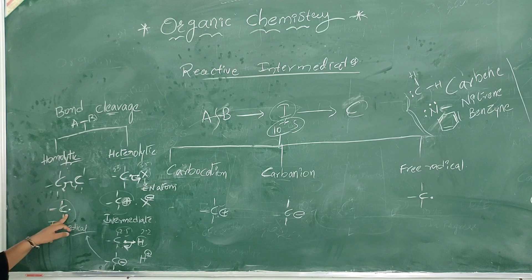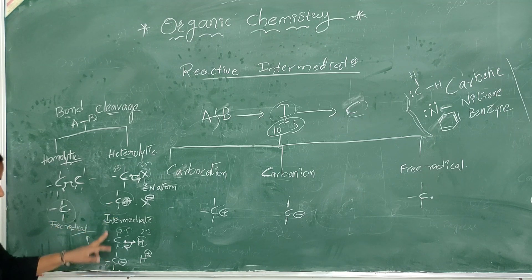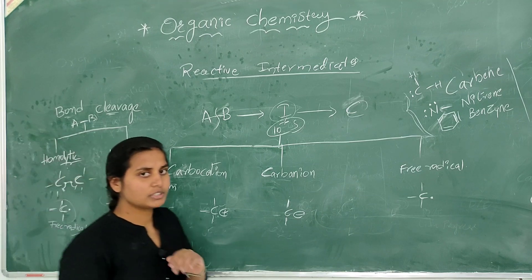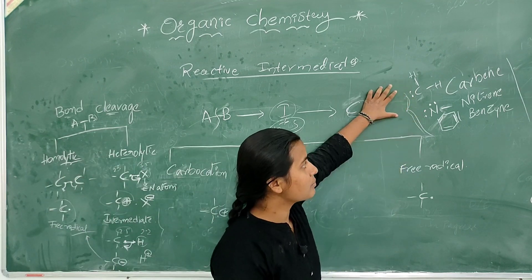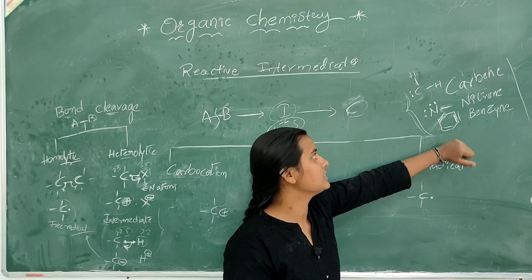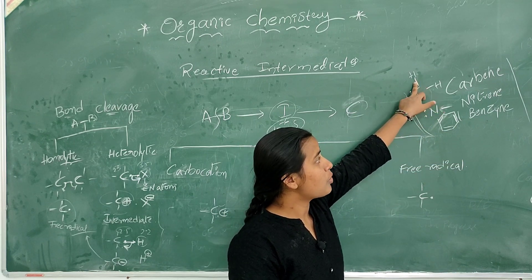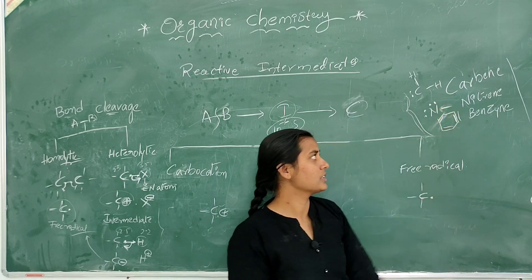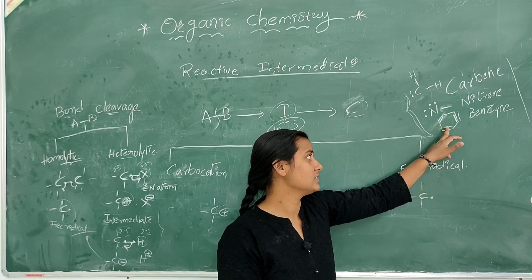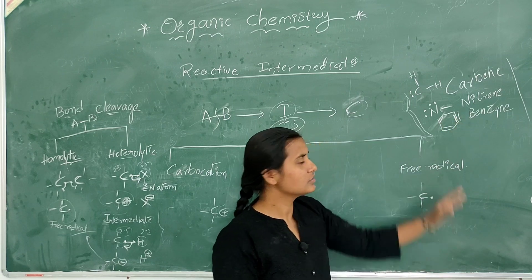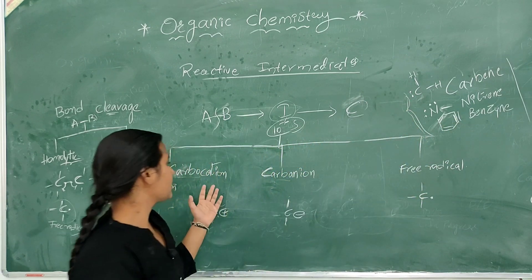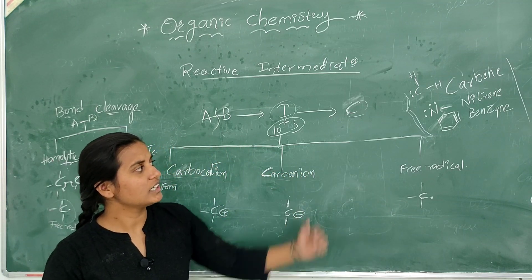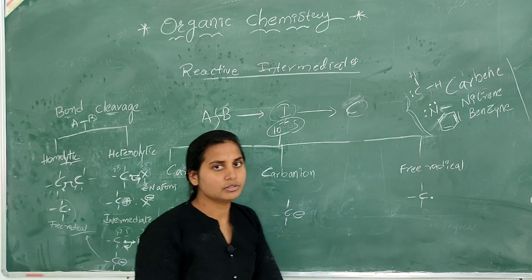So the three most important intermediates are: carbocation, carbanion, and free radical. Additionally, there are carbene — carbon with two bond pairs and one lone pair — nitrenе — nitrogen with two lone pairs and one bond pair — and benzene with one extra pi bond. We will discuss more about these three main intermediates.